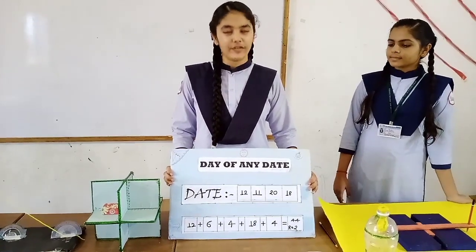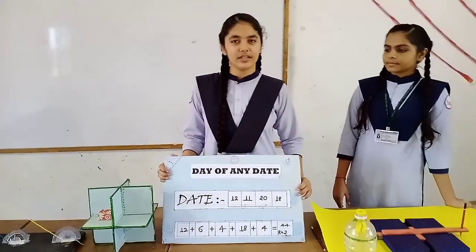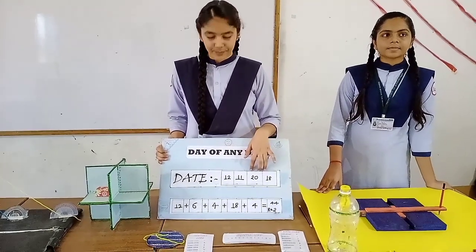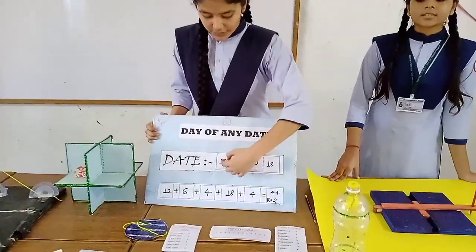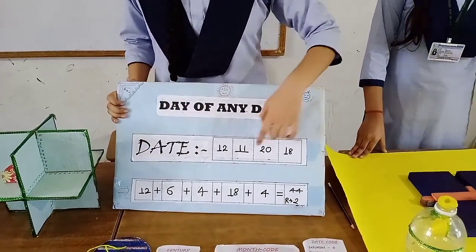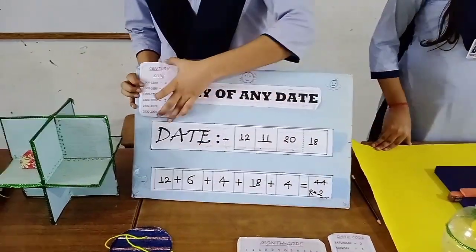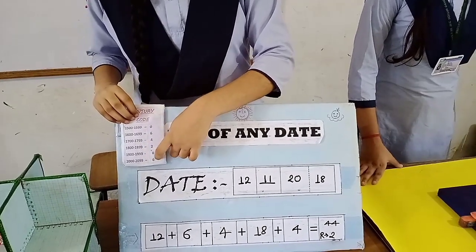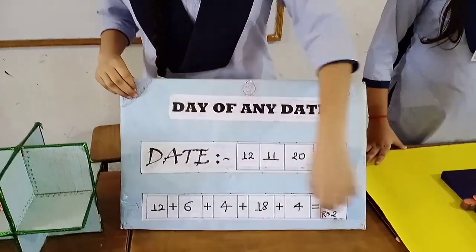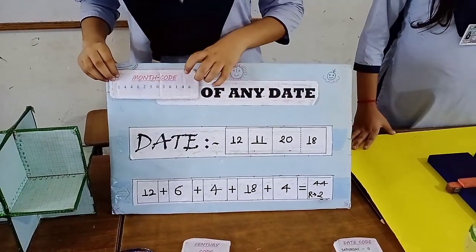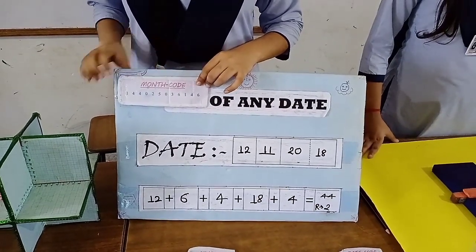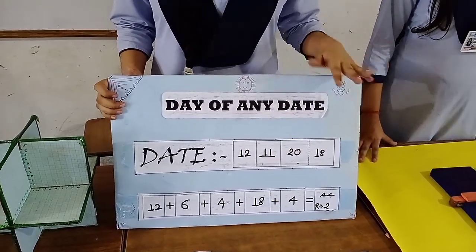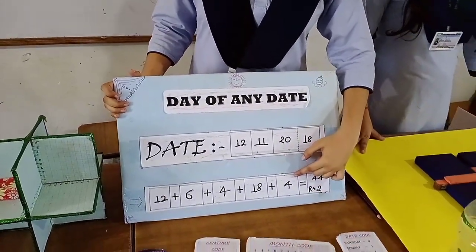The next model is finding the day of any date. Suppose the date is 12-11-2018. You divide the year into two parts — 12 is the first column and 18 is the fourth column. We have a century code: 2000–1999 gives a code of 6. Then we have a month code — November is in the second-to-last position, giving a code of 4. For 18, we divide by 4: 4 goes into 16 four times, giving 4.